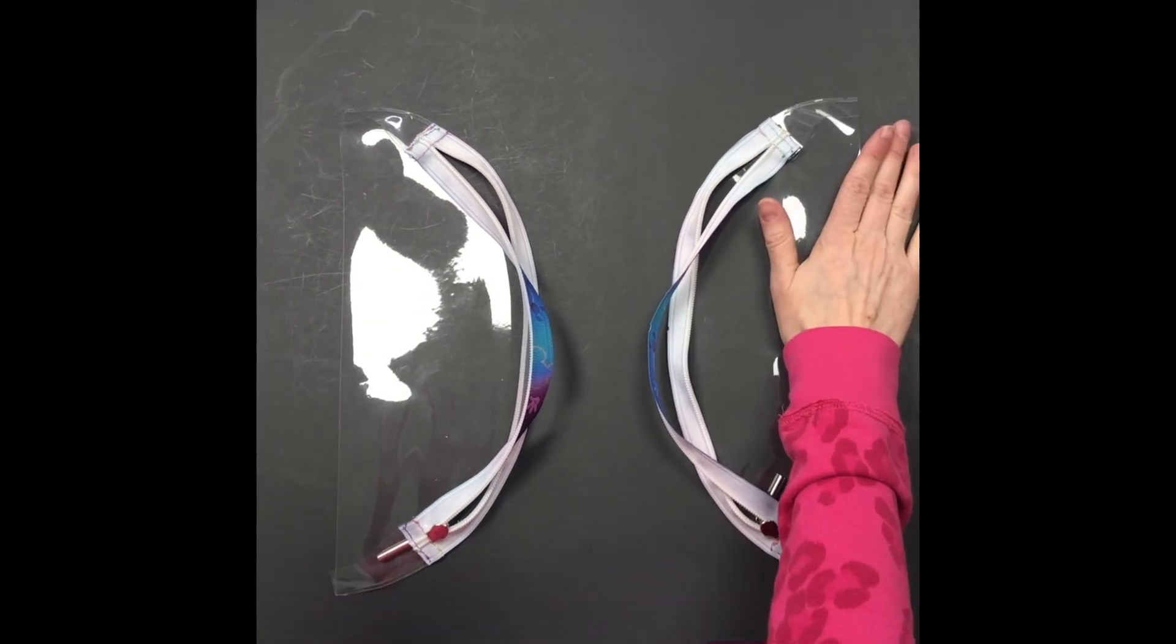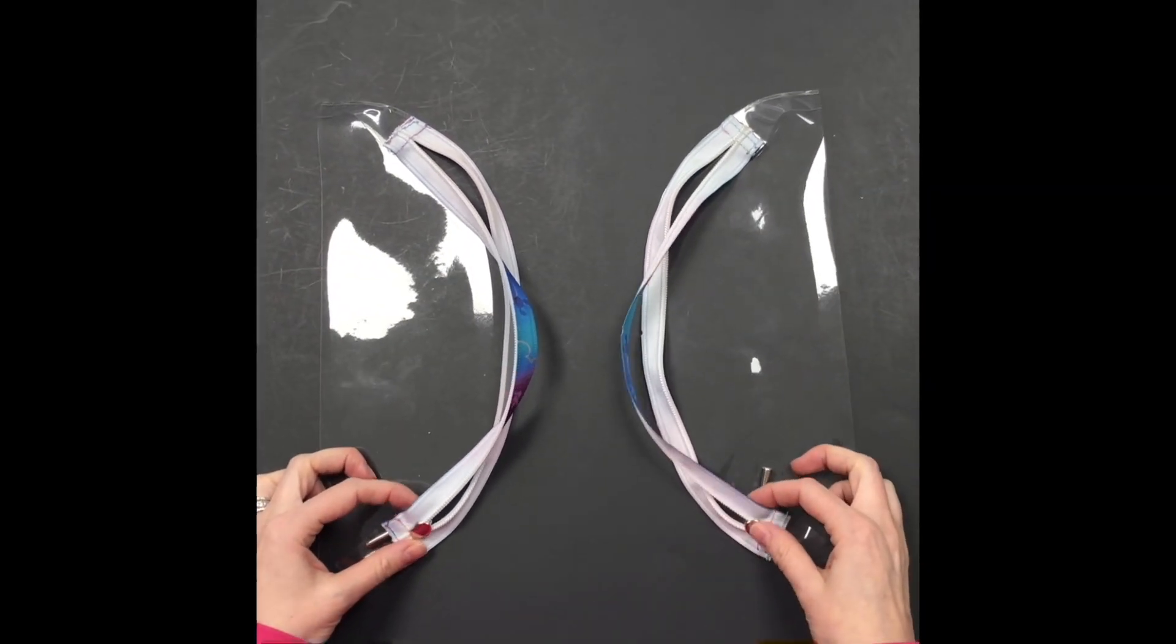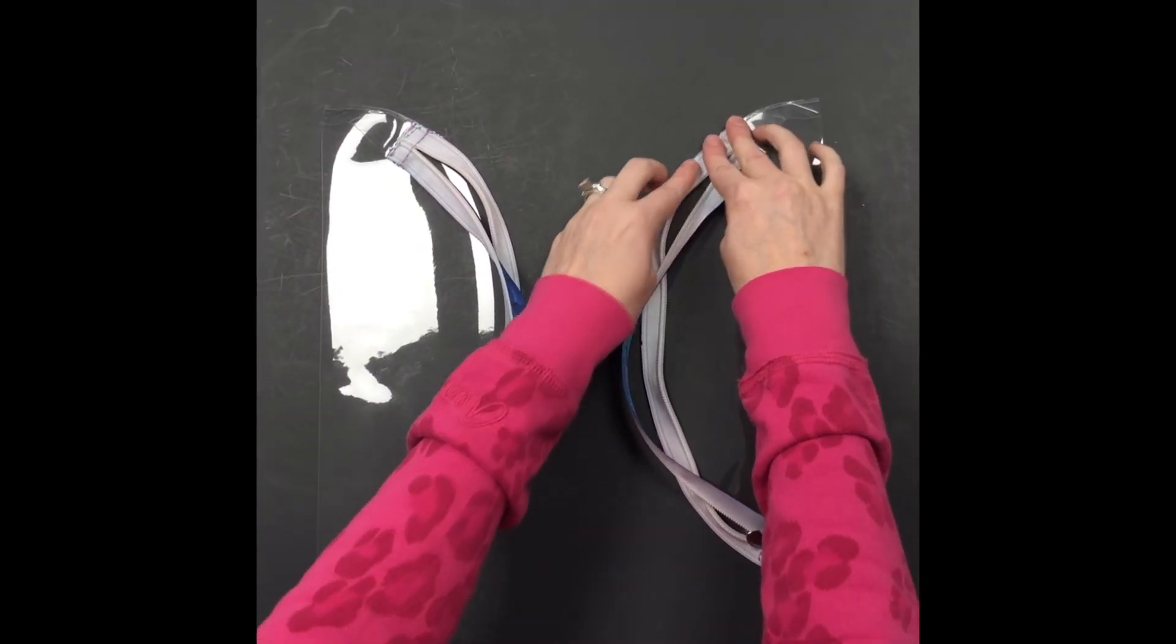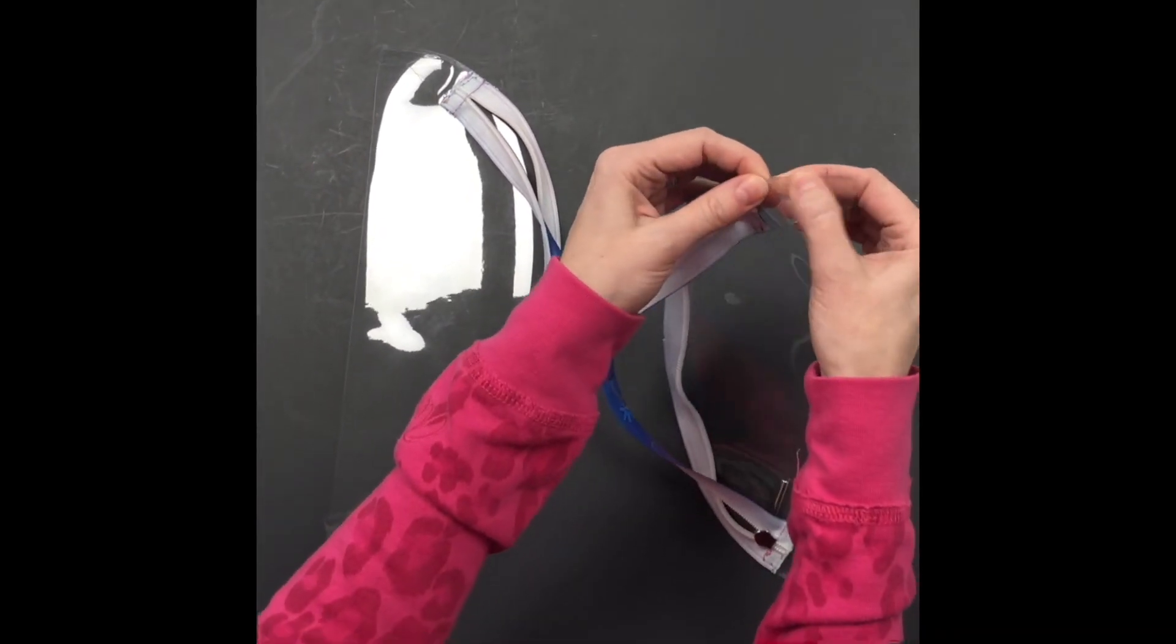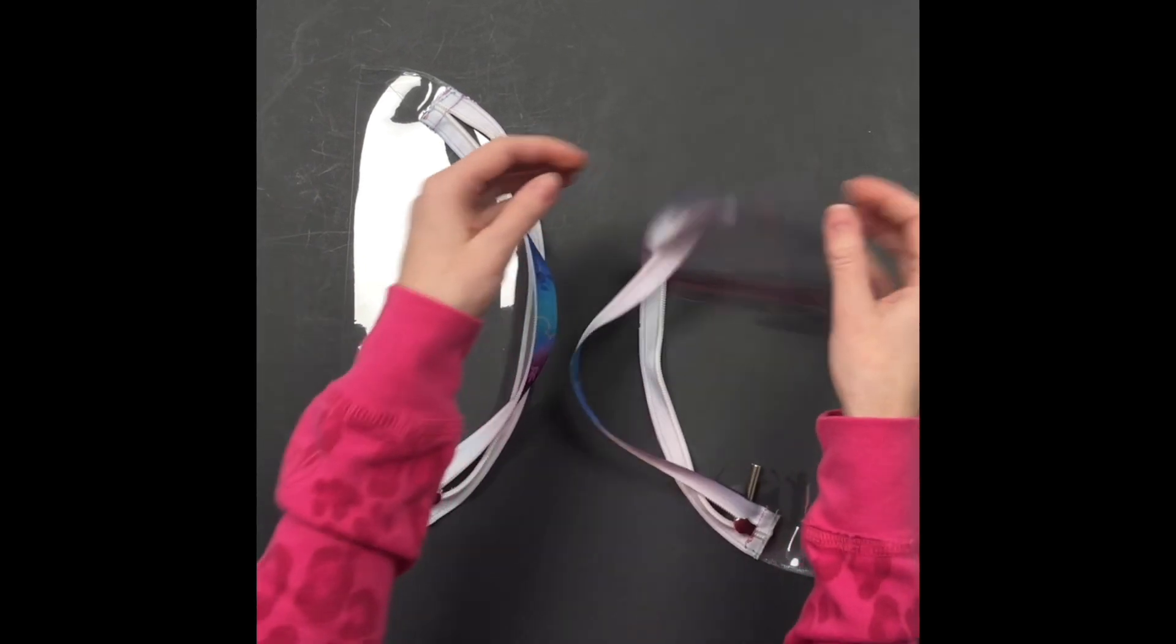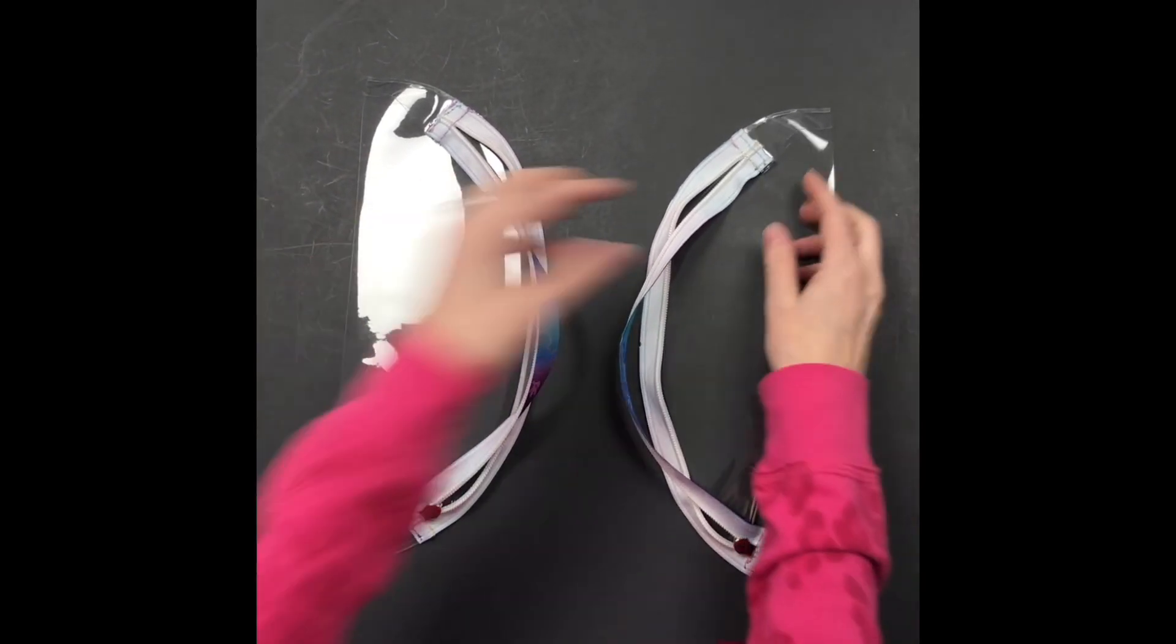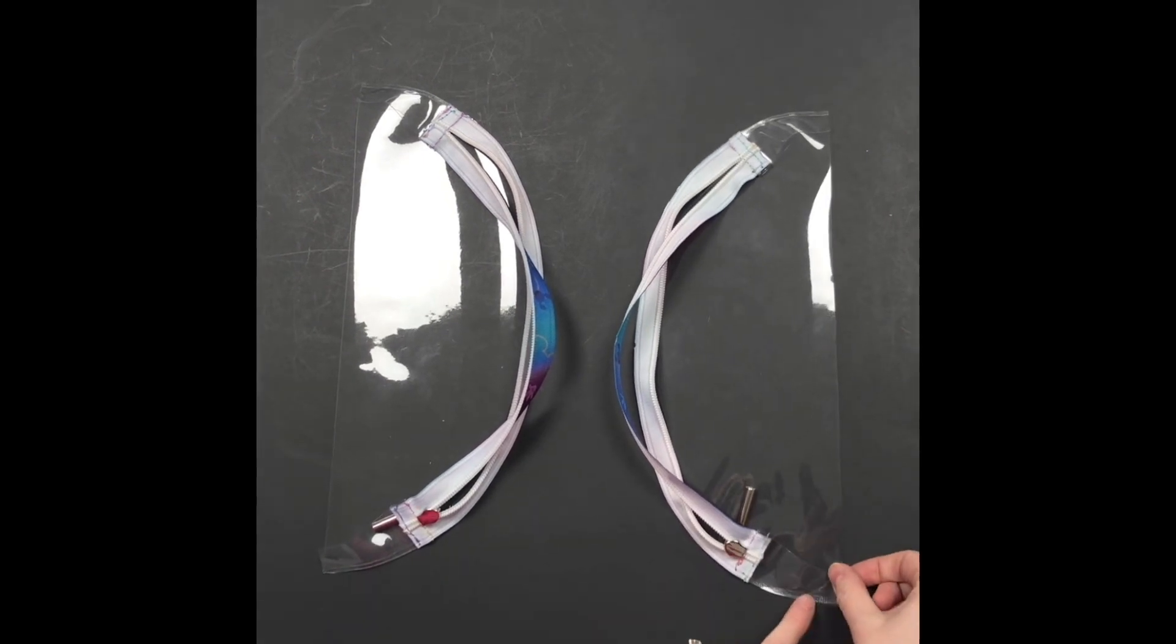The zippers just happen to be open, otherwise they would be up at the top. I do want to make sure that you're aware that once you put double-sided tape, especially this permanent leather adhesive, once you put it on your vinyl there's no getting it off. So even if I peel this off the tape still sticks.